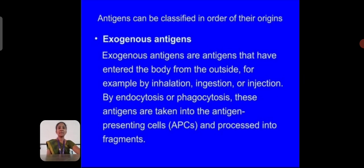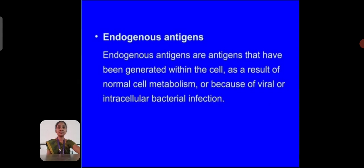Antigens can be classified according to their origin. The first type is exogenous antigen. Exogenous antigens are antigens that have entered the body from outside, for example by inhalation, ingestion, or injection by endocytosis or phagocytosis. These antigens are taken into antigen-presenting cells and processed into fragments.